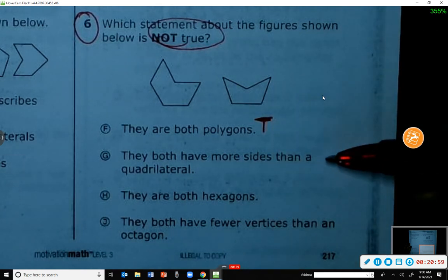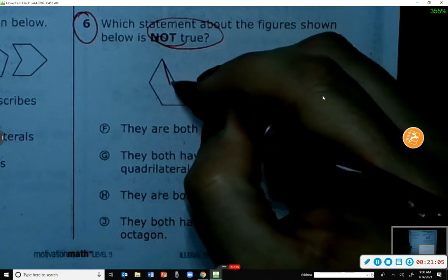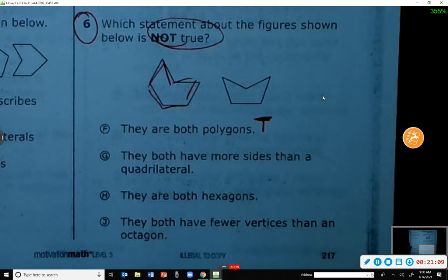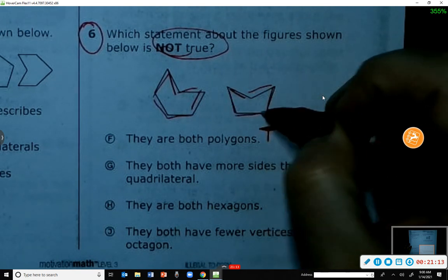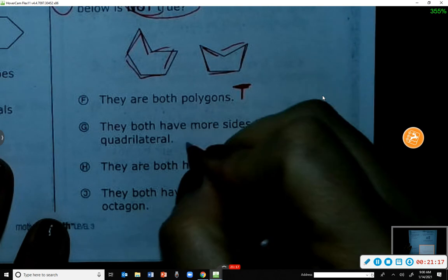G: They both have more sides than a quadrilateral. Well, let's see. There's one, two, three, four, five, six. Does that have more than a quad? Yes. One, two, three, four, five. Does that have more than a quad? Yes. So we would say this is true.